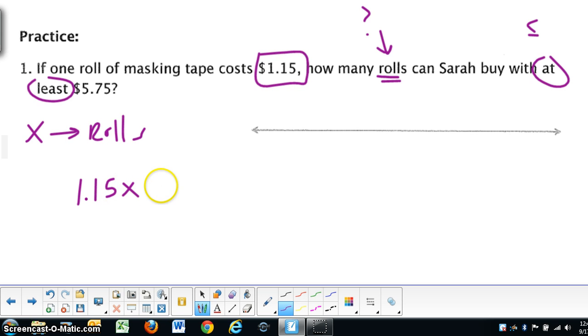so that's going to be times x, and it has to be at least $5.75. So there's the inequality that I would like you to set up, and after you solve by dividing both sides by 1.15, the answer will be x is less than or equal to 5. So that is how many rolls of masking tape you can get with $1.15. Now,